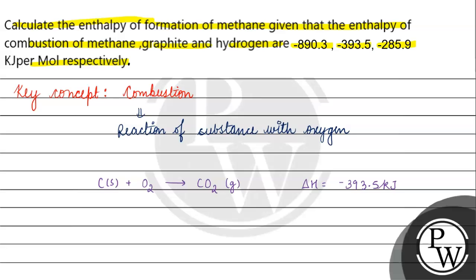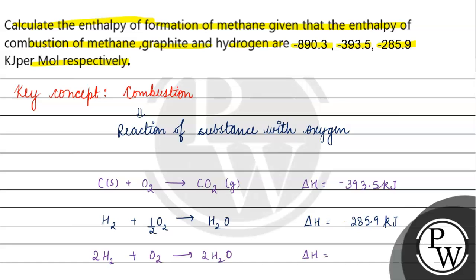The second reaction involves hydrogen. Hydrogen reacts with oxygen to give water. The enthalpy is -285.9 kJ/mol per mole. Since we have 2 moles of hydrogen, the total becomes -571.8 kJ/mol.